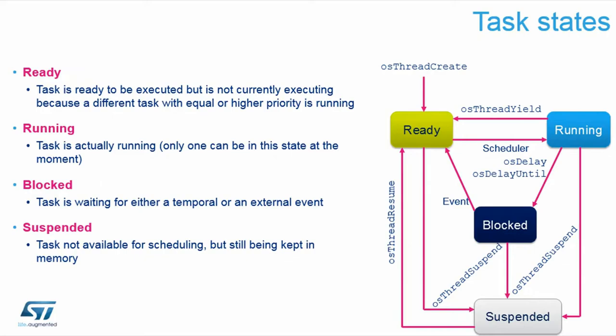We can see the task state machine: when created, tasks start in the ready state; when the scheduler decides to execute one, it moves to running. From running, a task can go back to ready by yielding, go to blocked by waiting for a resource or timeout, or be suspended. A suspended task returns to ready when osThreadResume is called. You can also suspend all tasks at once and resume them via an interrupt.